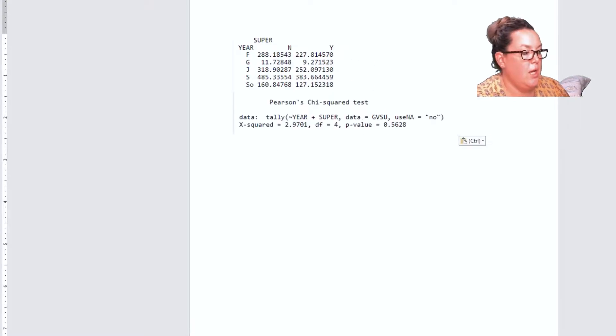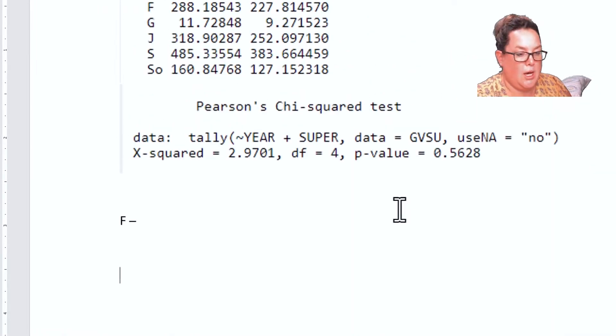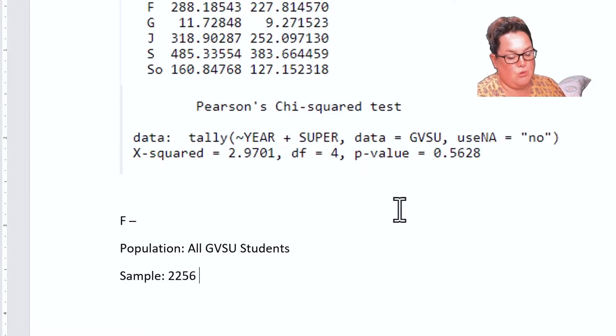Now remember when we do the FRED method we start with formulate the problem, so F for FRED. Let's zoom in a little for you. Our first thing is the population and this data is from GVSU students, so I'm going to say all GVSU students. The sample is going to be the exact same thing, it's just the number that you have, which for this one is 2256 GVSU students. The variables we have are going to be year and superstitious.